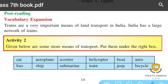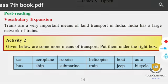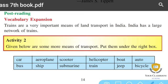Next is Sky transport: Aeroplane and Helicopter. Under Water transport: Boat, Ship, and Submarine. Fill these items in their different columns.